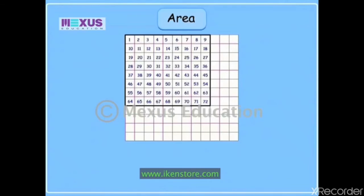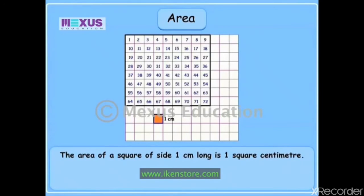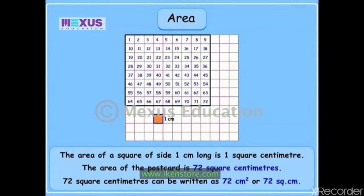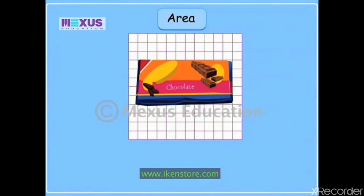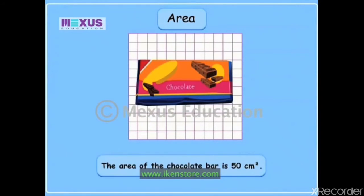Yes, but you are forgetting one thing. Remember, I had told you earlier that each square on this grid has a side of one centimeter — it is a standard unit to measure length. So listen carefully: the area of a square of side one centimeter is one square centimeter. And because seventy-two such squares can cover this postcard, we say that the area of the postcard is seventy-two square centimeters. We can also write square centimeter in short as cm². So if I place this chocolate bar on the grid and it covered fifty squares, the area of this chocolate bar will be fifty square centimeters.